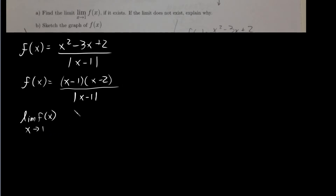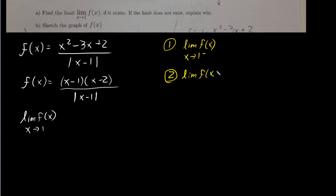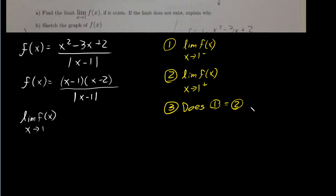We want to find the limit of this function as x approaches 1. So the three things we have to find are: first, the limit as x approaches 1 from the left; second, the limit as x approaches 1 from the right; and third, does step 1 equal step 2? If they're the same, that's the limit. If they're different, the limit does not exist.